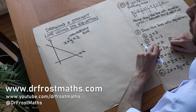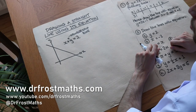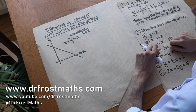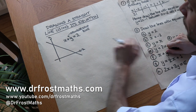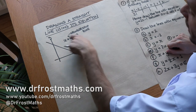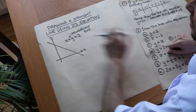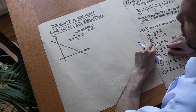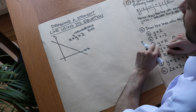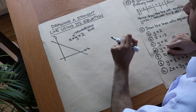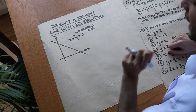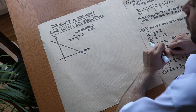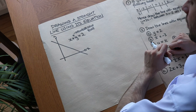Hello and welcome to this video on drawing a straight line using its equation. In the previous video we saw that we could think of the equation of a line as some kind of membership rule. It's a membership rule that dictates whether a point, a coordinate, is allowed to belong on the line.